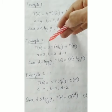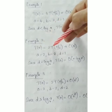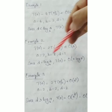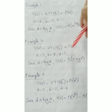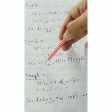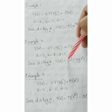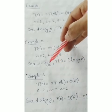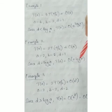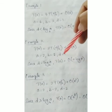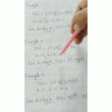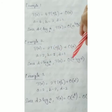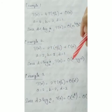Second example, second case: T of n equal to 2T(n/2) plus Big O of n. Here a equals 2, b equals 2, d equals 1. Now d equals log a to the base b — log 2 to the base 2 equals 1. Since d equals 1 equals 1, we apply the second case: T of n equals Big O of n log n.